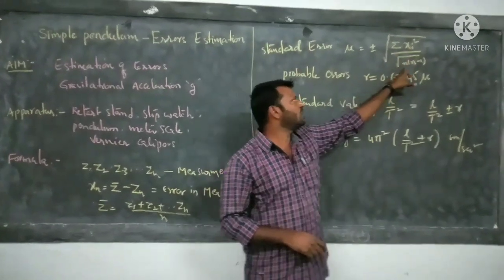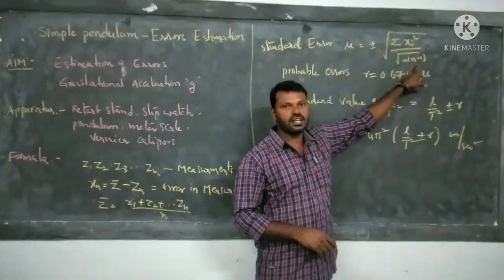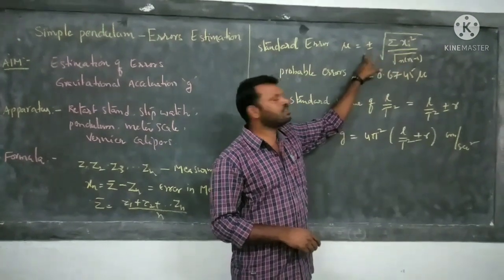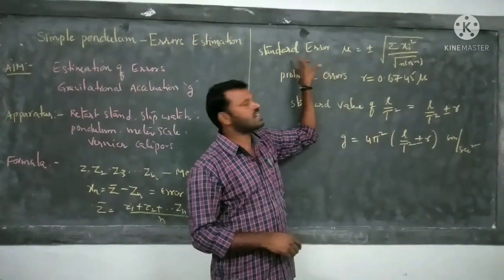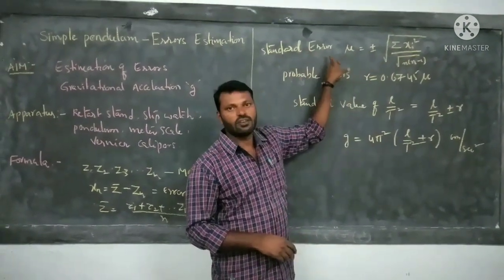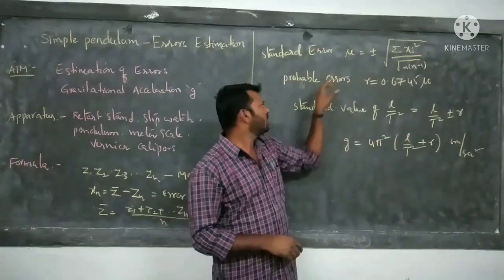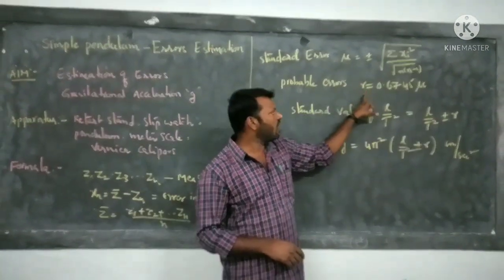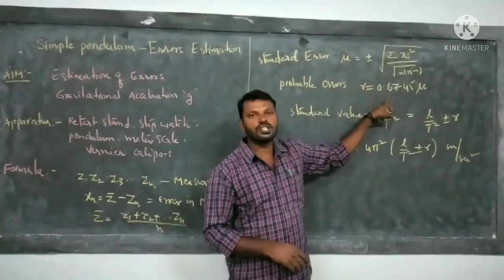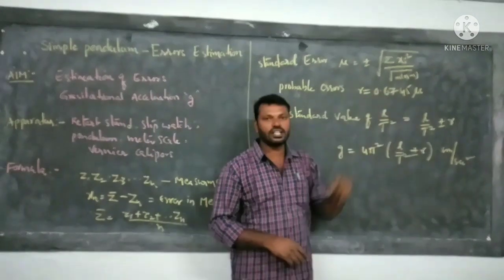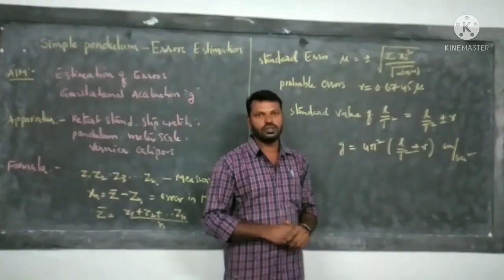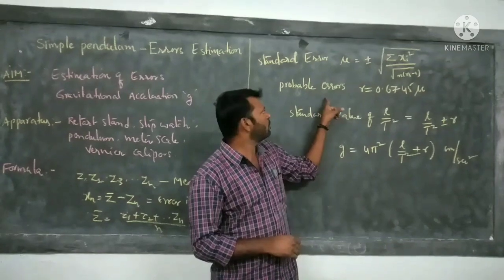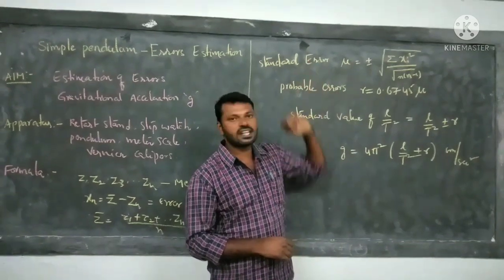The standard error formula is: mu equals the square root of the summation of Xi squared, divided by the square root of n times (n minus 1), where n is the number of readings. From this formula you can calculate the standard error. Once you have the standard error, the probable error is: r equals 0.6745 times mu. From this formula you can find out both probable error and standard error.